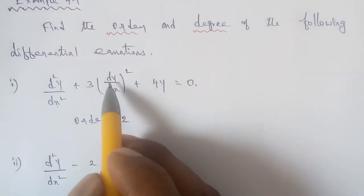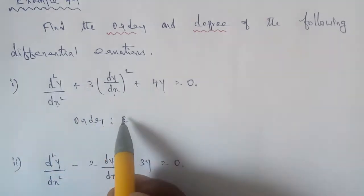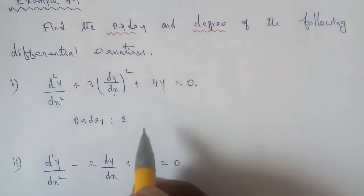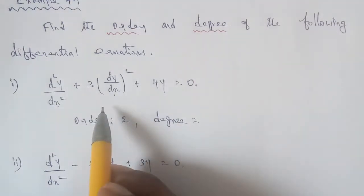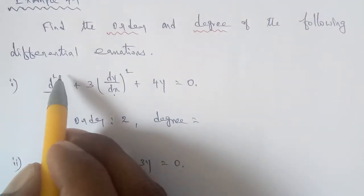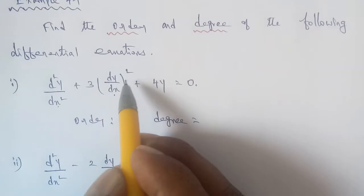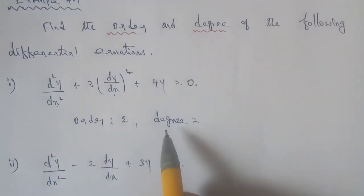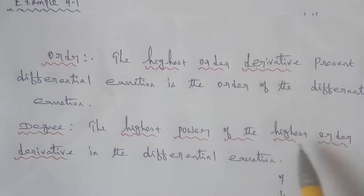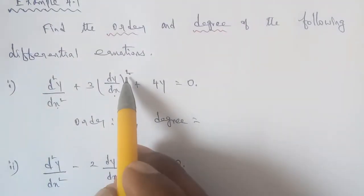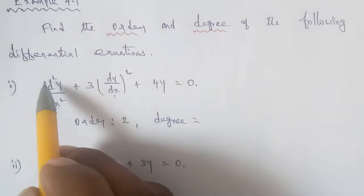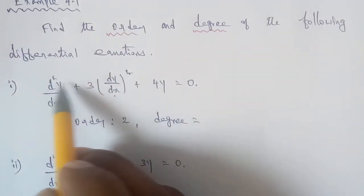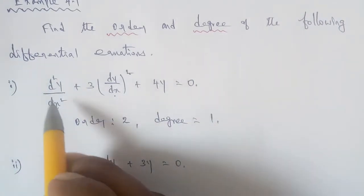The highest order is 2, so the order is 2. For the degree, we look at the power of the highest order derivative d²y/dx². Its power is 1, so the degree is 1. Therefore, order = 2 and degree = 1.